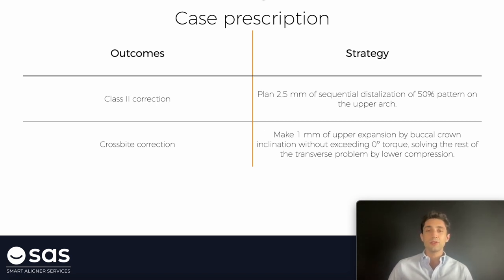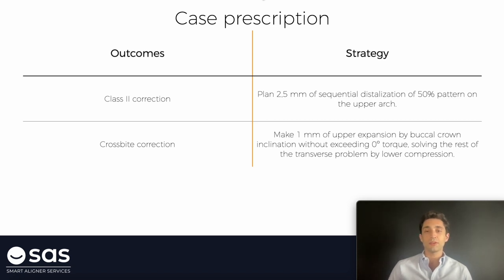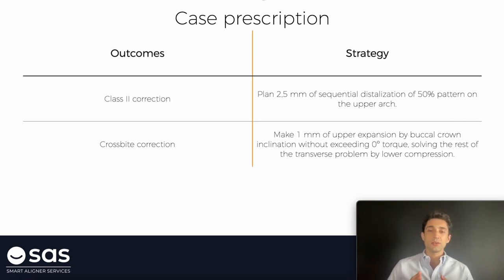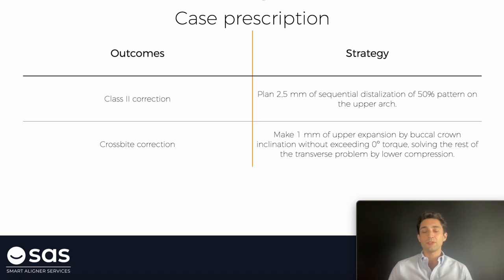On cases with cross bite, it could be solved with upper expansion, with lower compression, with a combination of both, with a Marvier appliance, whatever. But here I'm going to solve it just with aligners, and I want to limit the expansion on the upper arch. So I can write to the technician: please make 1 mm of upper expansion by buccal crown inclination without exceeding zero torque on the posterior sectors, solving the rest of the cross bite with lower compression. Here I'm not asking for any type of overcorrections. I could write please apply 6 or 8 degrees of buccal root torque of upper molars — that's right — but I prefer to do it with 3D controls, because on cross bites it's more difficult to do from the beginning. Those overcorrections should be planned carefully with 3D controls.